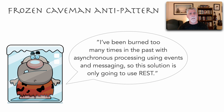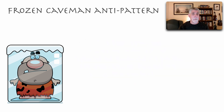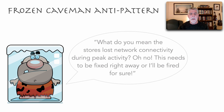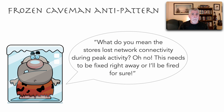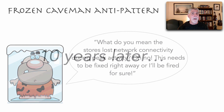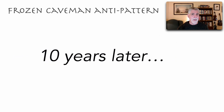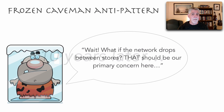This is a good example of making decisions based on prior occurrences. Here's another one that relates to the example in our book: 'What do you mean the stores lost connectivity on the network during peak activity? This has got to be fixed right away or I'll be fired for sure.' And it was in fact an emergency. Fast forward 10 years — a Frozen Caveman asks, 'What if the network drops between stores? That should be our primary concern here.'